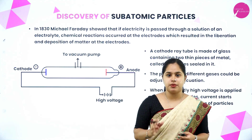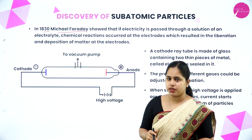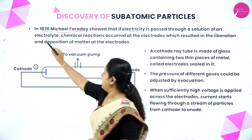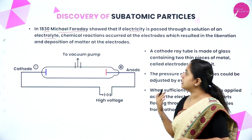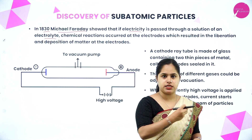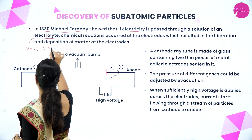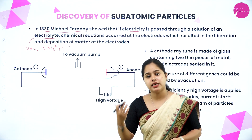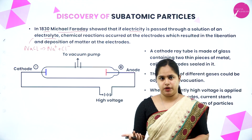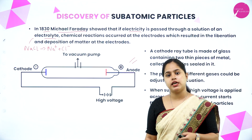A beginning to the discovery of subatomic particles was made by Michael Faraday in the year 1830. He showed that if electricity is passed through a solution of an electrolyte, chemical reactions occurred at the electrodes which resulted in the liberation and deposition of matter at the electrode. For example, with sodium chloride — constituted of Na⁺ and Cl⁻ ions — chemical reactions take place when electricity is passed. He took the setup called a cathode ray tube or cathode ray discharge tube.